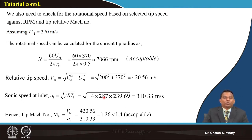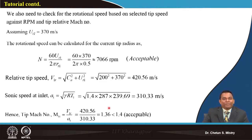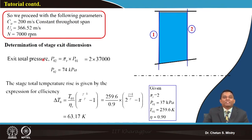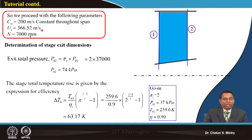We fix axial velocity at 200 m/s and peripheral speed. The tip peripheral speed assumption of 370 m/s is valid; you could also assume 7500 RPM — there is flexibility. After iteration, we finalize axial velocity at 200 m/s, peripheral speed at 366.52 m/s, and rotational speed at 7000 RPM.